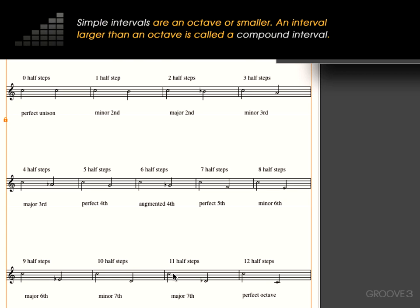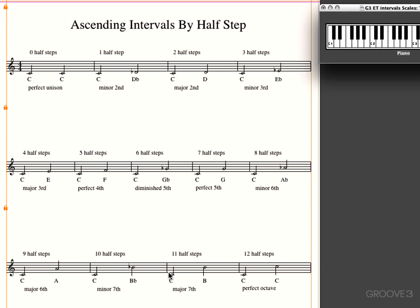These are all called simple intervals. Because they're all within an octave. If it was greater than an octave, the interval would be called compound. So to reiterate, we can take the smallest division that we have in the western tonal system, which is the half-step. It's also called the semitone.